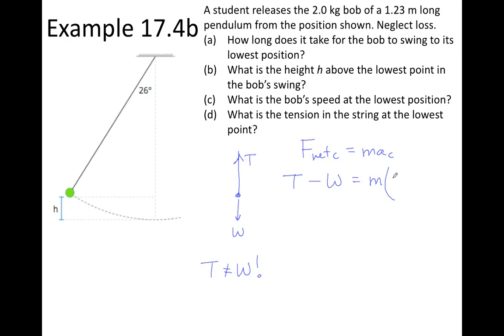And the centripetal acceleration is given by speed squared over R. The value of the weight, we can work out using M times g, or 2 times 10. The speed, remember we needed that value, 1.57 squared. And then the radius of motion is going to be the same as the length of the pendulum. In this case, 1.23 meters. And when we calculate the value for the tension, we end up getting 24 newtons,